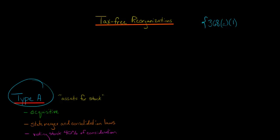So let's start with a Type A reorganization. It's called Type A because it's under Section 368(a)(1)(A), and a Type B reorganization would be Section 368(a)(1)(B), and so forth.